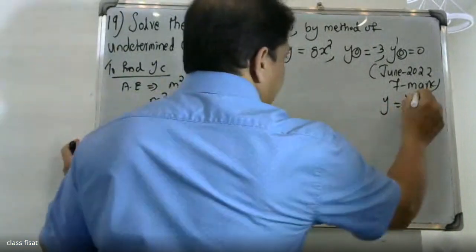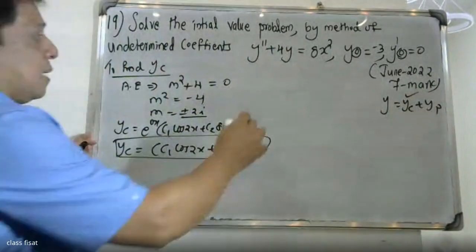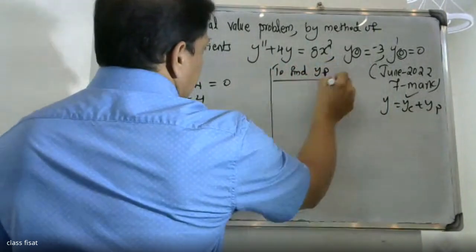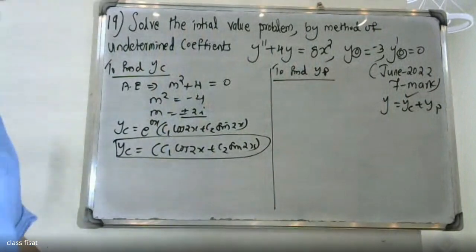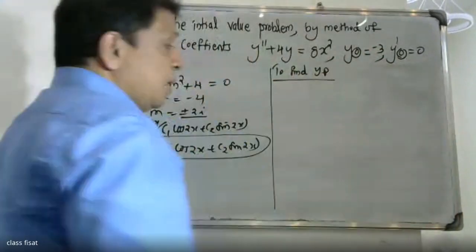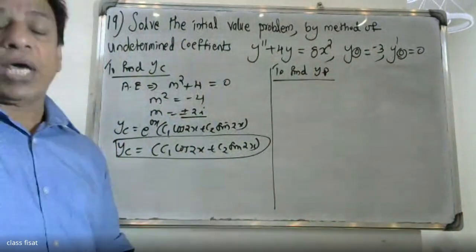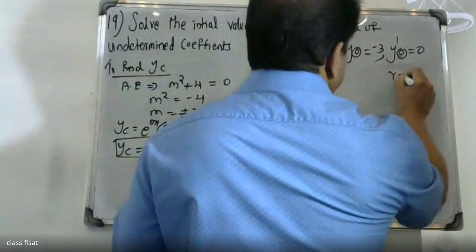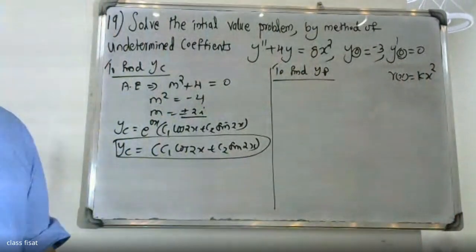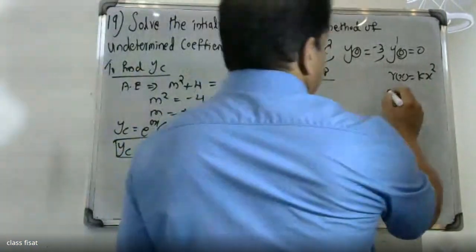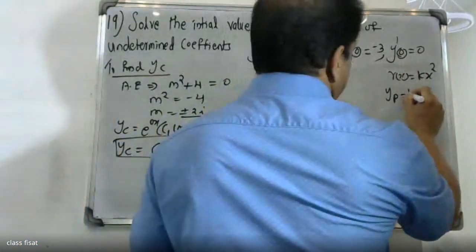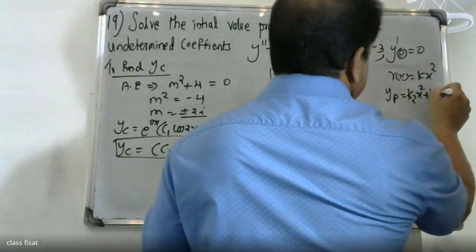This is the value of yc. Now to find yp. The right-hand side is 8x², so r(x) = 8x². We choose yp in the form k2·x² + k1·x + k0.